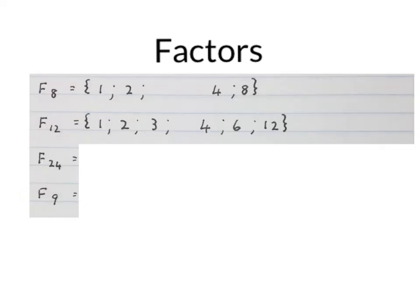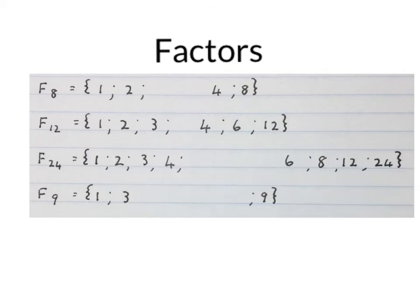Now please stop the video and you work out the factors of 24 and the factors of 9. Remember to start with 1 and 24 and so on. Well done. So 1 and 24, 2 and 12, 3 and 8 and 4 and 6 are the factors of 24. The same with 9. The factors are 1 and 3 and 9. Remember 1 times 9 is 9 and 3 times 3 is 9. We only write the 3 once. The factors of 9 are 1, 3 and 9.